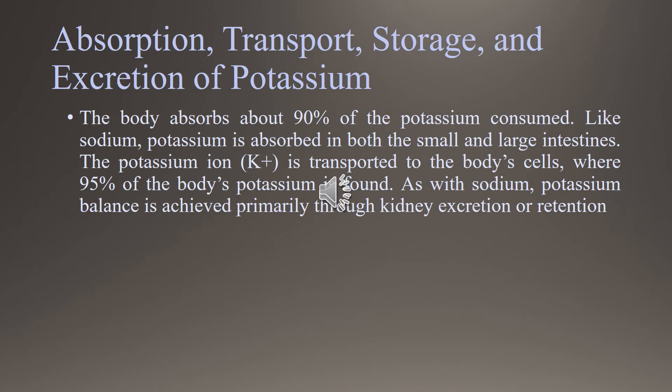Potassium is also necessary for the transmission of nerve impulses and muscle contraction. Like sodium, potassium absorption takes place in the small and large intestine. In cases of diarrhea, vomiting, or excessive use of laxatives for constipation, potassium deficiency occurs. Symptoms of potassium deficiency include nausea, vomiting, muscle weakness, heart issues, and tachycardia — increased heart rate. In heart failure, renal failure, or with excessive intake of potassium, high blood levels of potassium can result.